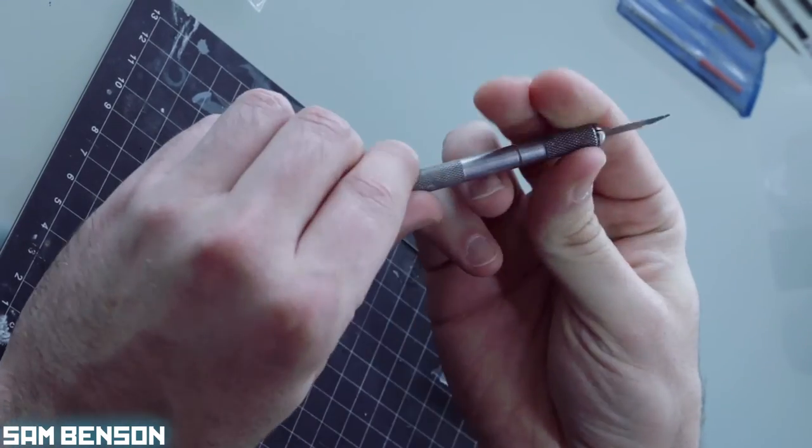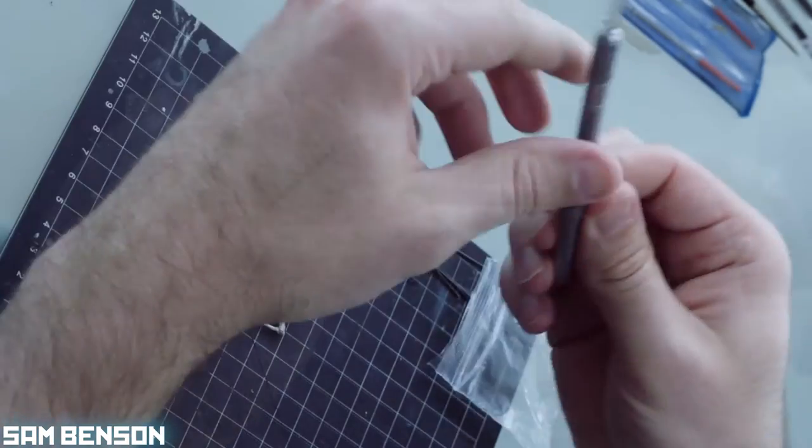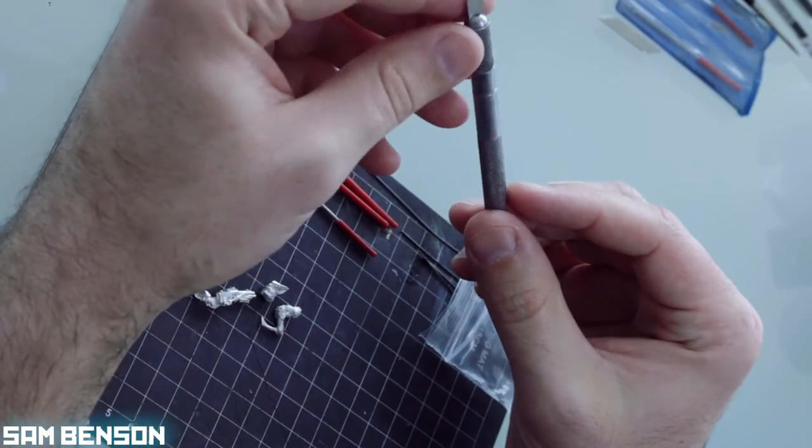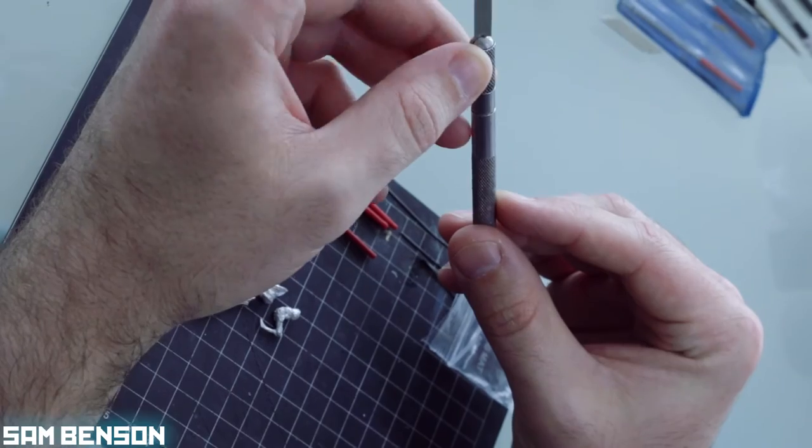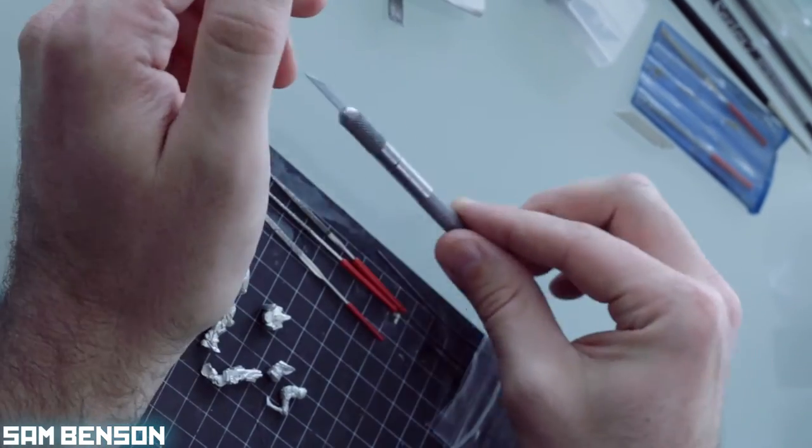Next thing I'll use is a scalpel with a fresh blade, basically used for any areas where the files won't get to. Usually I'm just using the very tip of that just to quickly whip off that little bit of mold line.